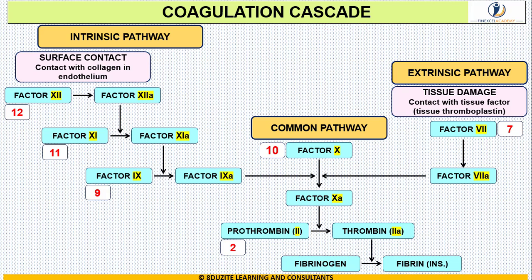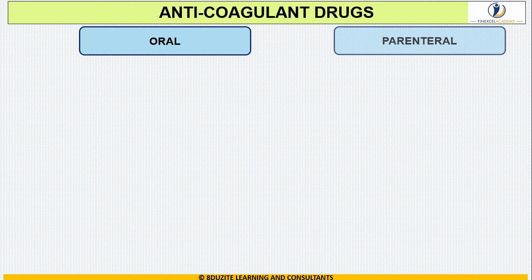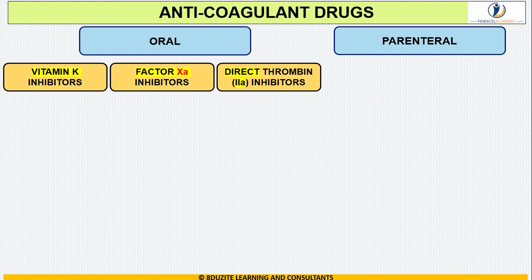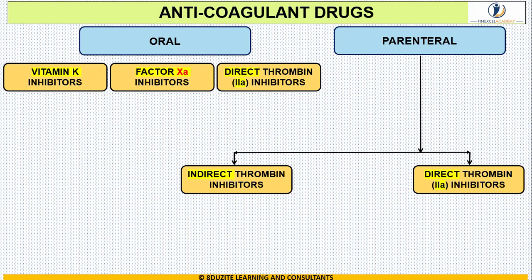Knowing the coagulation cascade, let us now move to the anticoagulant drugs. We have two groups: oral and parenteral. In the oral group there are three broad categories: Vitamin K inhibitors, Factor 10a inhibitors, and Factor 2a (direct thrombin) inhibitors. In the parenteral group there are two categories: indirect thrombin inhibitors and direct thrombin inhibitors.